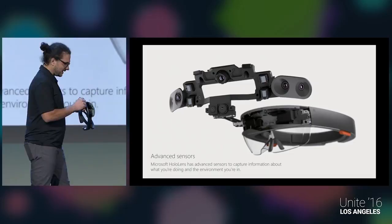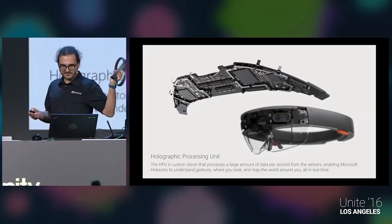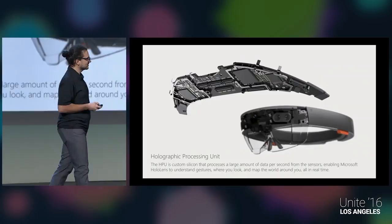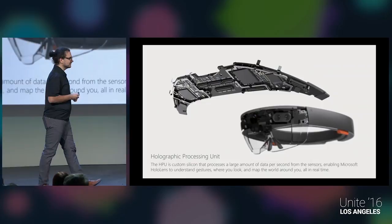Together, the environmental cameras and depth camera enable what's called spatial mapping — the device maps out the room so you can place holograms at correct positions on real surfaces. The device also has a microphone array useful for speech recognition. Inside is a custom motherboard with CPU, GPU, and a co-processor Microsoft calls the HPU — the Holographic Processing Unit — which handles spatial mapping, gesture recognition, and speech recognition.